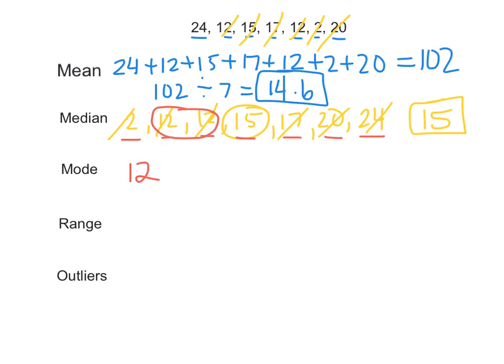The range is the difference between the highest and lowest number. So you're going to take your highest number, 24, and subtract your lowest number, 2, and that gives you a range of 22.